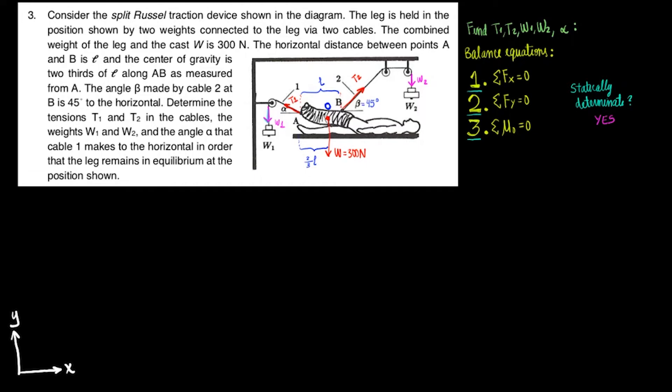For equation 1, we have two forces in the x direction. These are the x components of T1 and T2. Let's write the components in a format that allows us to isolate either T1 or T2 when we need to.